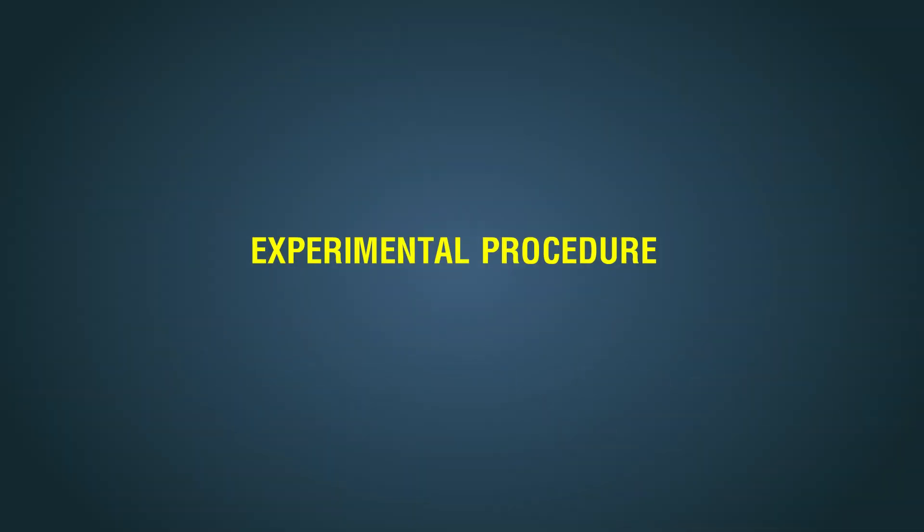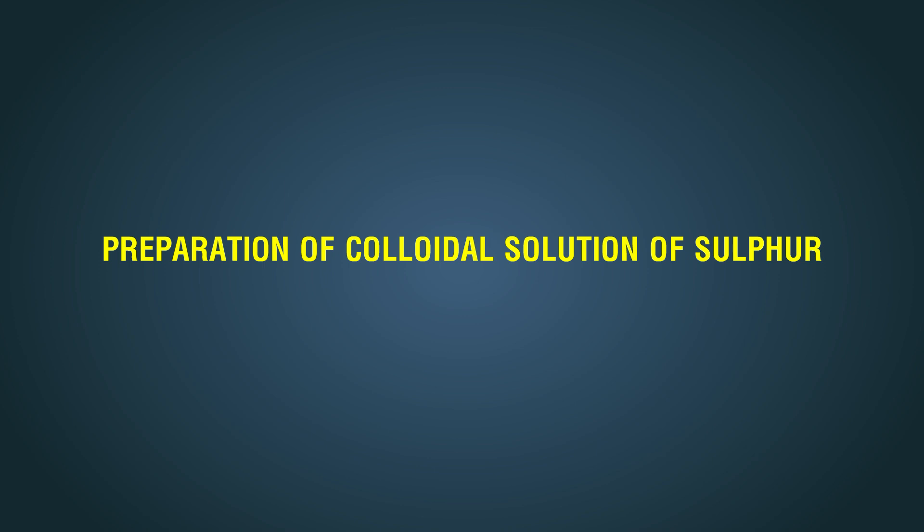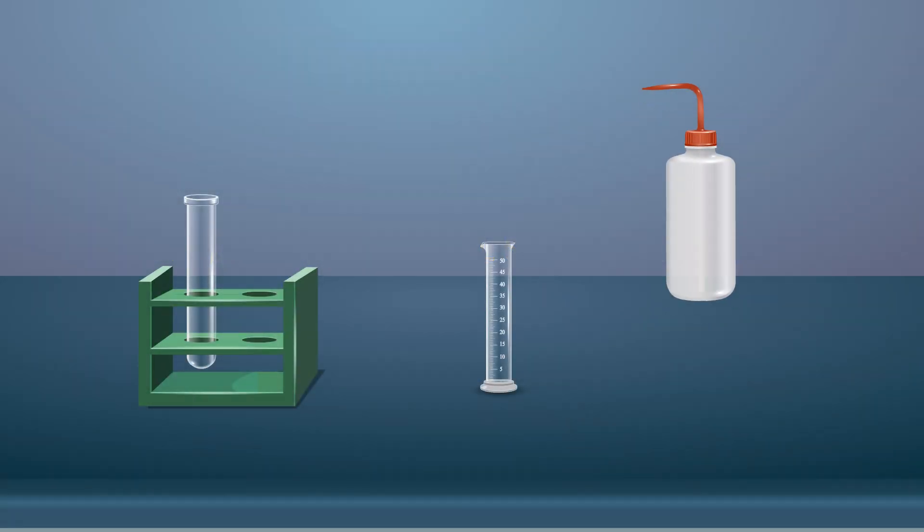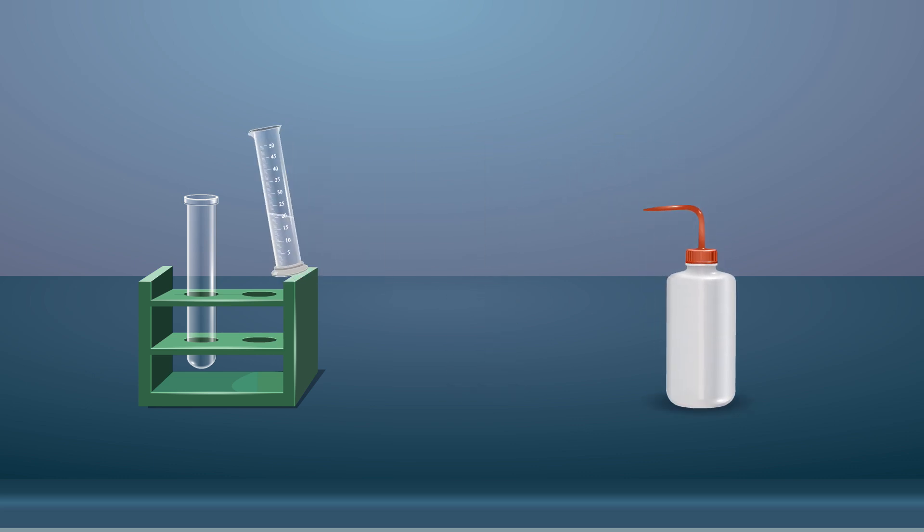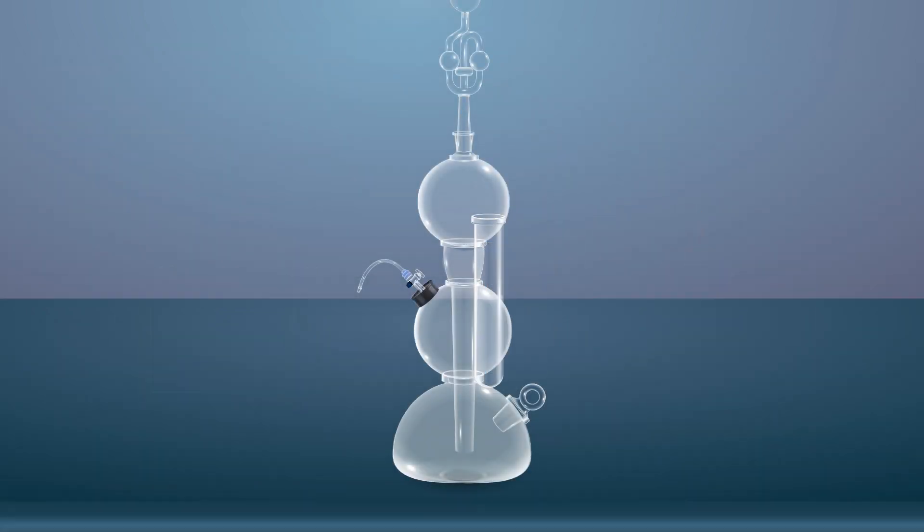Experimental procedure: Preparation of colloidal solution of sulfur. Take about 20 milliliters of distilled water in a boiling tube and pass H2S gas through it for about five minutes.